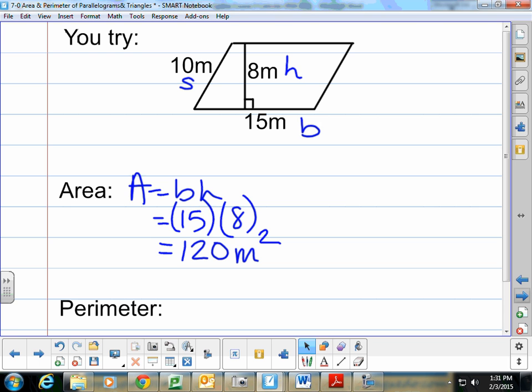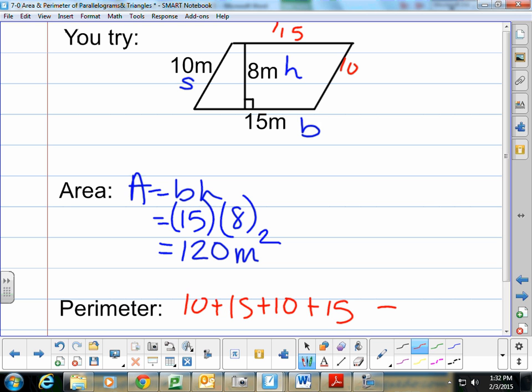For the perimeter, your sides are 10, 15, 10, and 15. So you do 10 + 15 + 10 + 15 for a grand total perimeter of 50 meters.